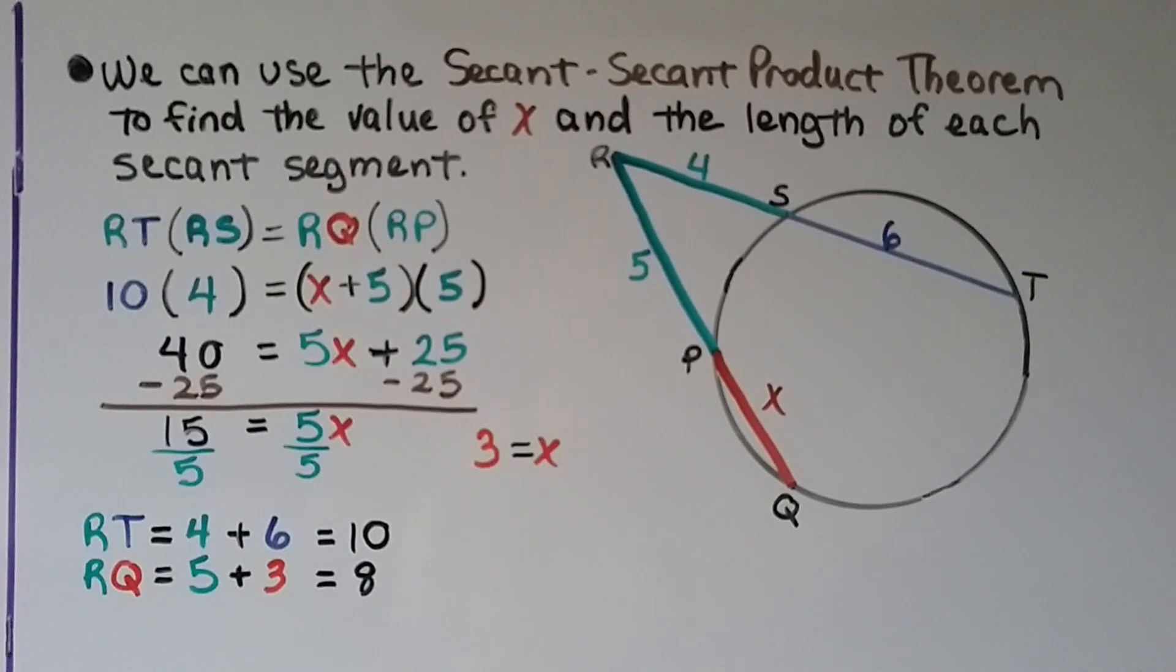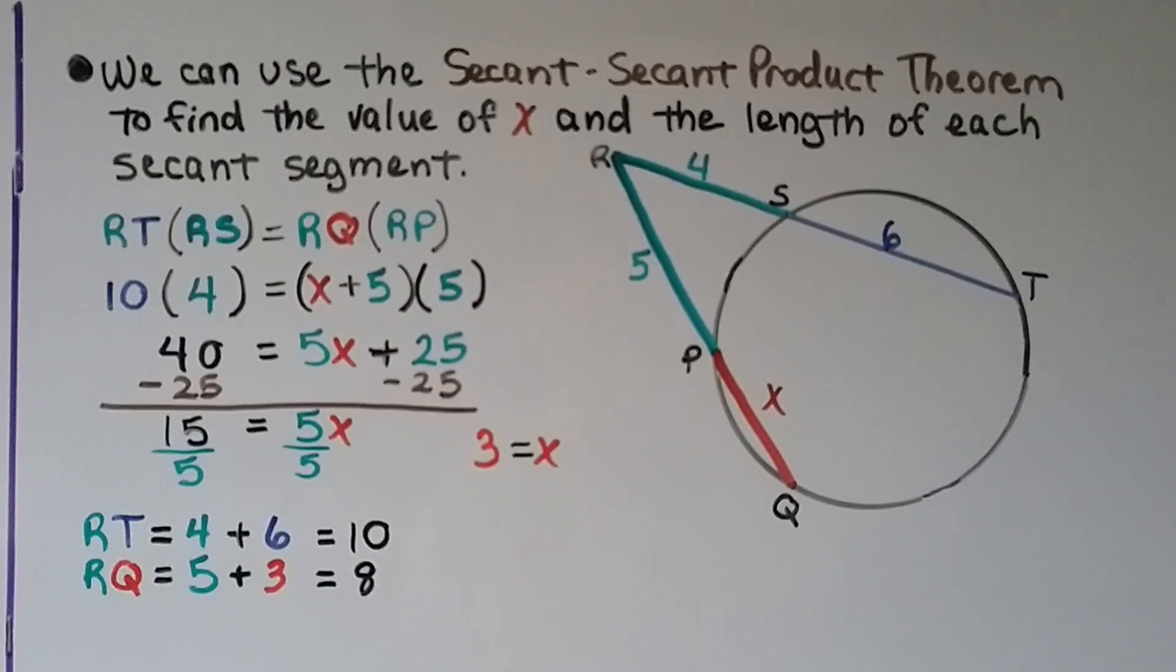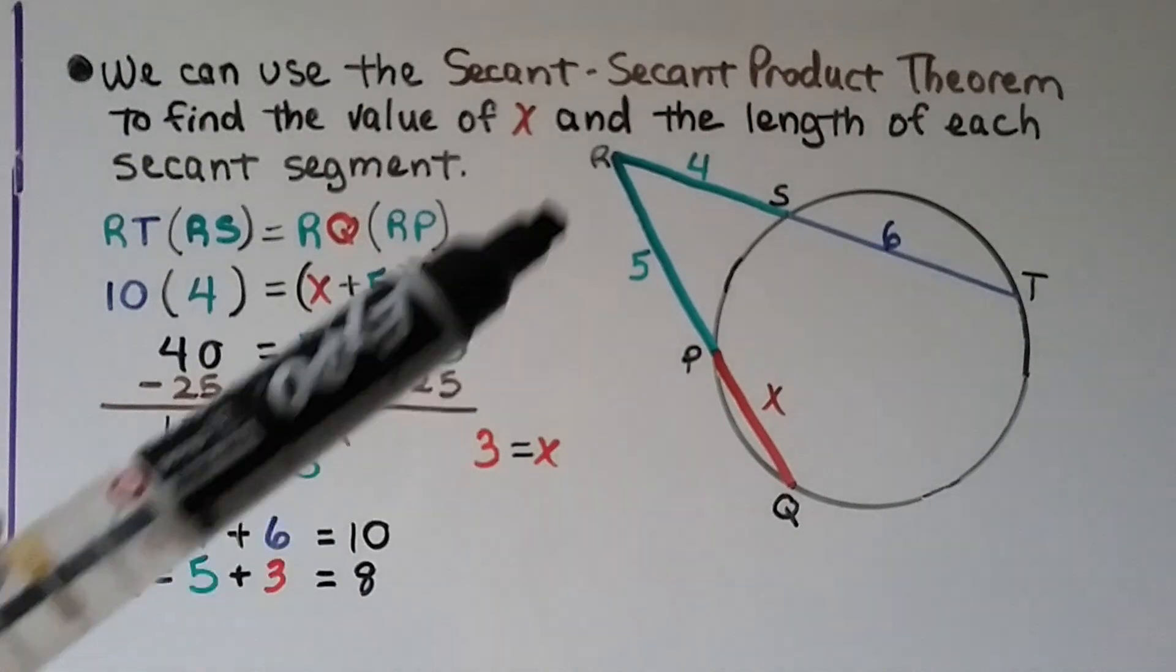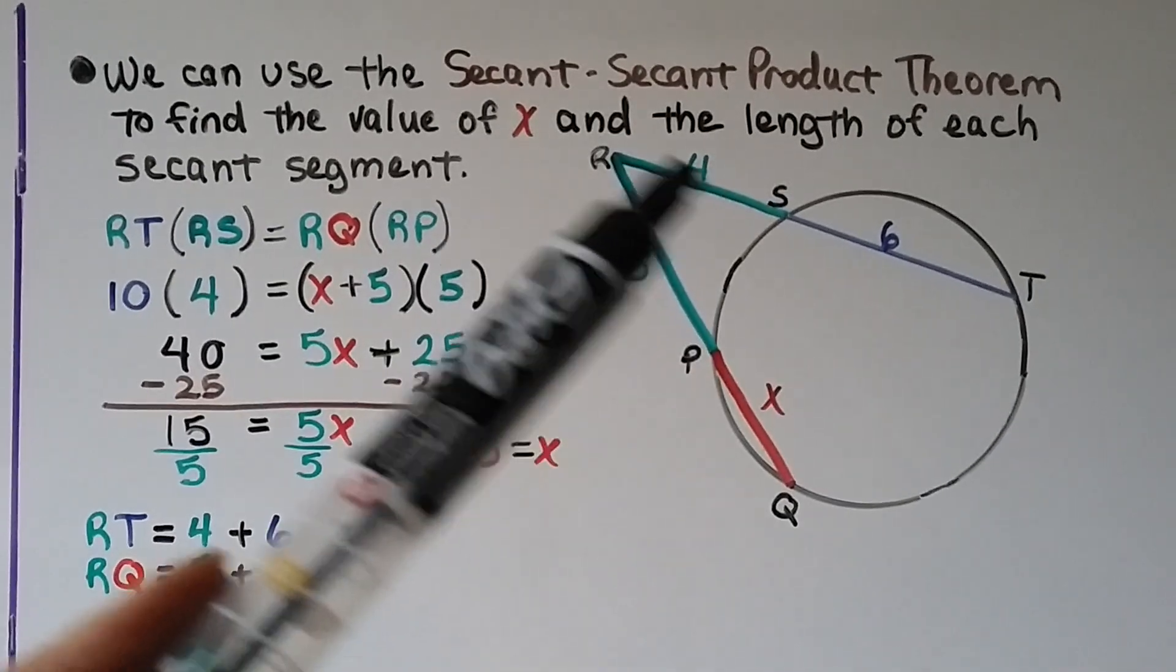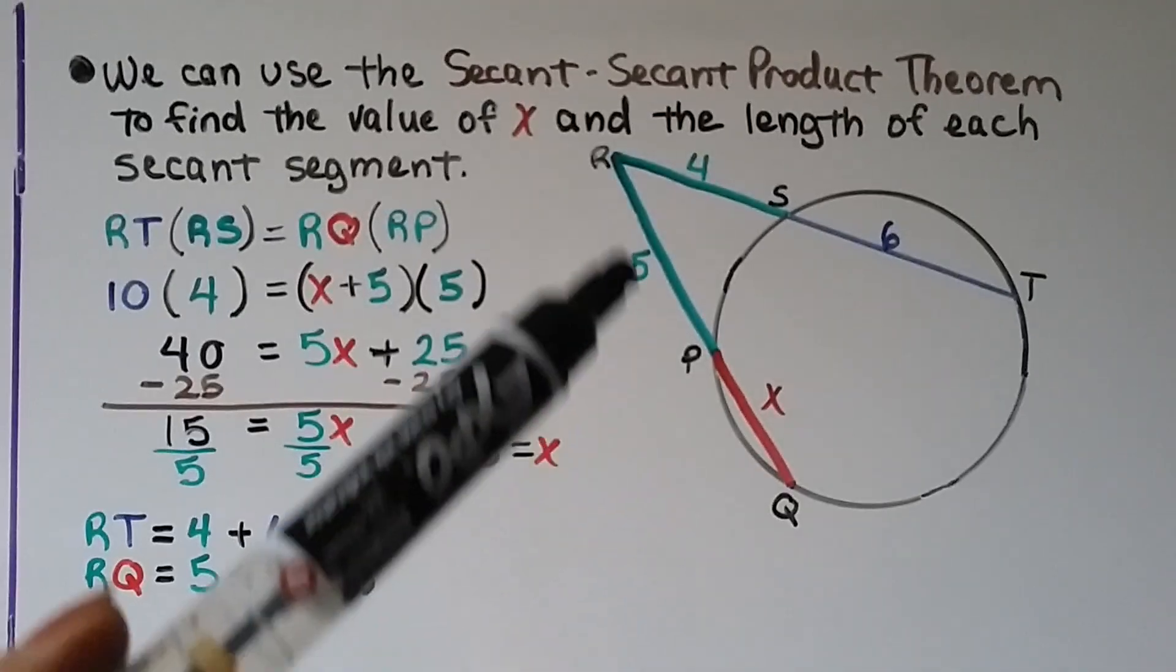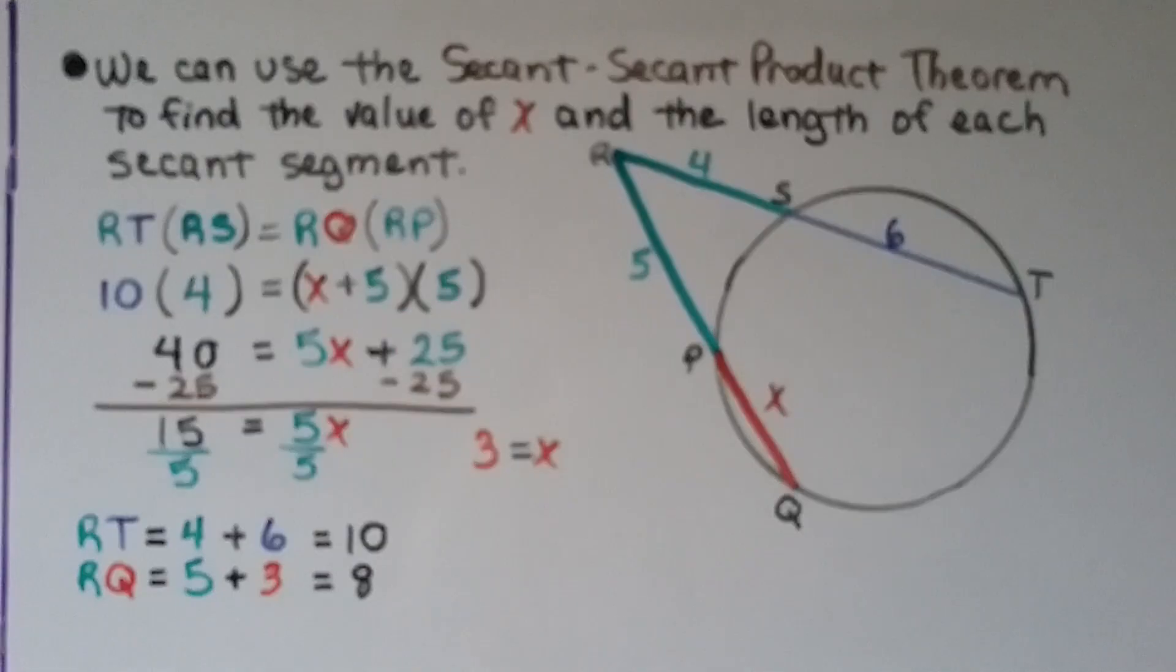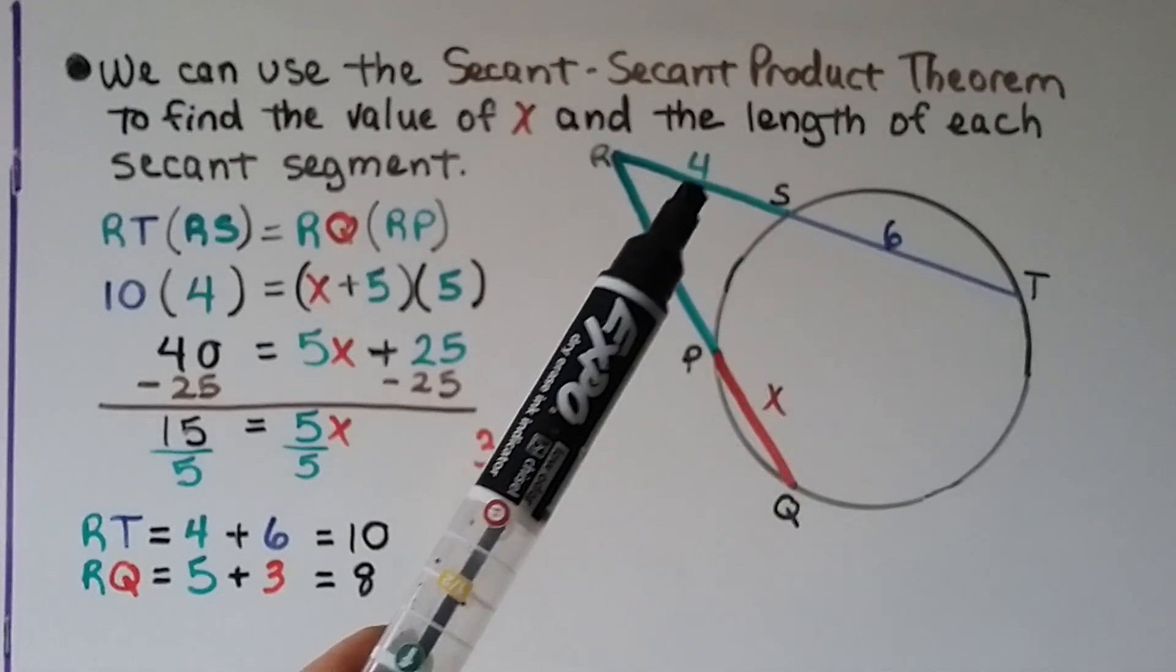We can use the secant-secant product theorem to find the value of X, this length right here, and the length of each secant segment. We have RT, this entire length, times RS, its external, is going to equal RQ, this entire length, times its external. This entire length is a 4 and a 6, so that's a total of 10, that's a sum of 10.